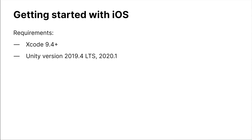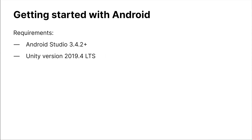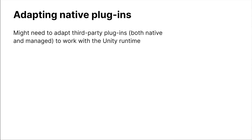When getting started with iOS, there are a couple things to consider. Right now, this is only supported on Xcode 9.4. For Unity, we suggest using the latest LTS or latest stable release — so 2019.4 or 2020.1. For Android, the requirement is Android Studio version 3.4.2, and we similarly recommend using Unity LTS 2019.4. A couple of things to consider when developing Unity as a Library is how complex your Unity application is — if you're using lots of third-party or native plugins, you might have to adapt them, both native and managed, to work with the Unity runtime.